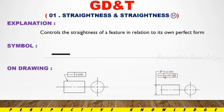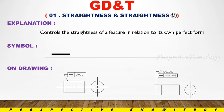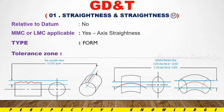The straightness symbol shows 0.03, with M indicating maximum material condition. The diameter is 10 plus or minus 0.05. If the straightness value is within tolerance, the component is acceptable and at the OK level. If the specification is out of tolerance, the component is out of spec and not OK — it goes to rejection.